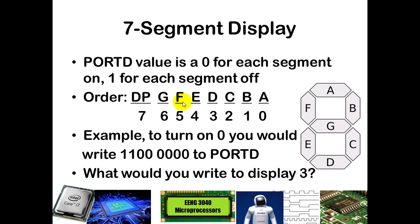The segments map to bits in reverse order: bit 0 corresponds to A, bit 1 to B, bit 2 to C, bit 3 to D, and so on. So if you wanted to display the digit 0, you would want all six perimeter segments on, putting zeros in the lower six bits. G would be off, so we put a 1 there, and the decimal point off, so also a 1. That gives us the binary value 1,1,0,0,0,0,0,0, which would display a 0 when that digit is turned on.